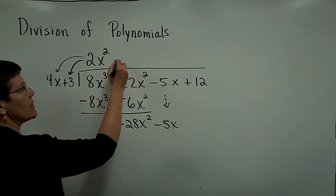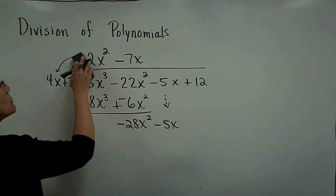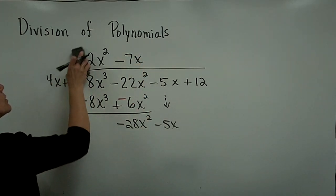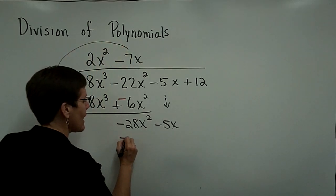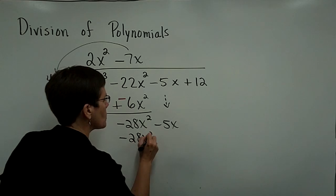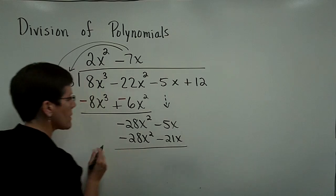I need now up here a negative 7x, because when I multiply it, the negative 7x by the 4x, I get exactly a minus 28x squared. And then this minus 7x times 3 is a minus 21x.